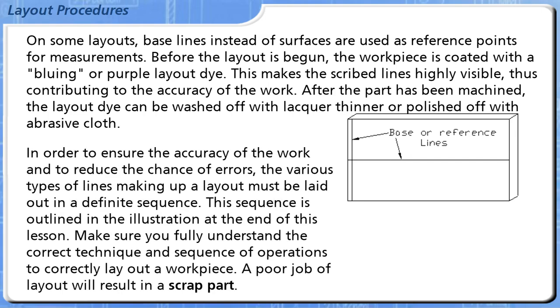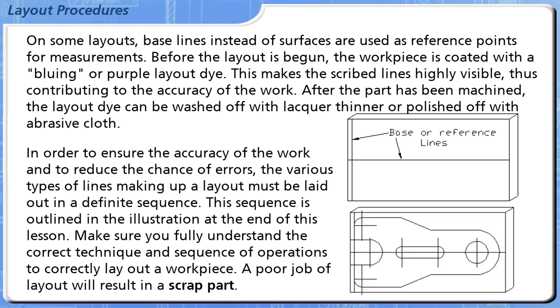In order to ensure the accuracy of the work and to reduce the chance of errors, the various types of lines making up a layout must be laid out in a definite sequence. This sequence is outlined in the illustration at the end of this lesson. Make sure you fully understand the correct technique and sequence of operations to correctly lay out a workpiece. A poor job of layout will result in a scrap part.